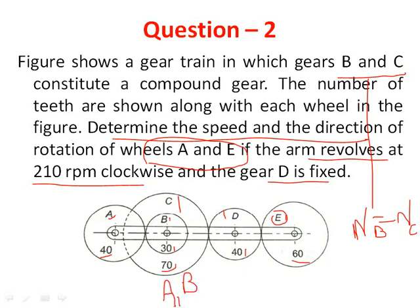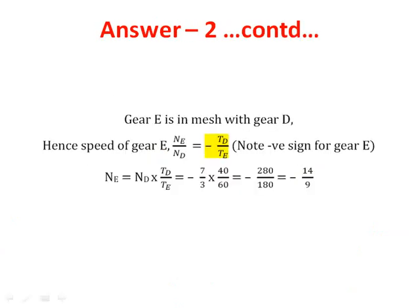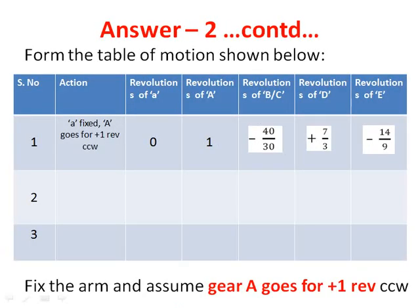First we identify the number of elements. The first element is gear A. Since B and C are a compound drive, they are taken as a single element. Next we have gear D, gear E, and finally the arm — giving us a total of 5 elements.